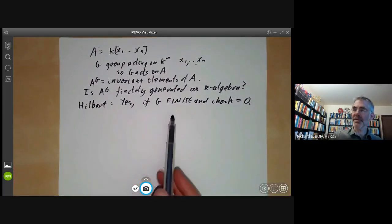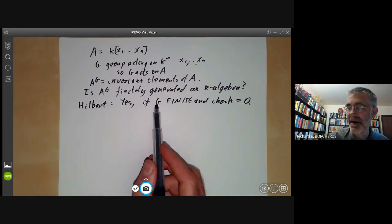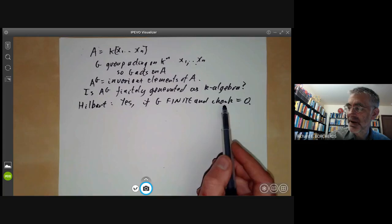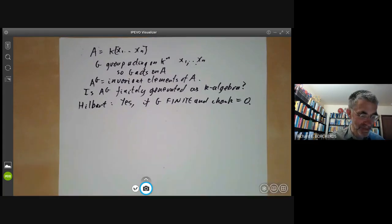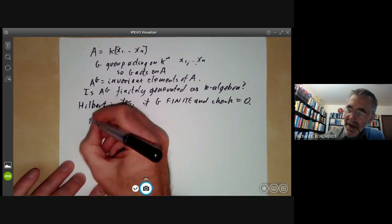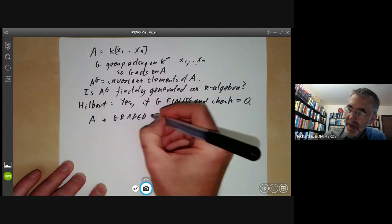And actually, Hilbert proved a much more general theorem. He didn't assume G was finite. He allowed G to be almost any reductive group. But we will do finite groups for simplicity. The condition about characteristic k being zero is not necessary, but simplifies the proof quite a lot. So to prove it, we notice that A is graded by the degree.